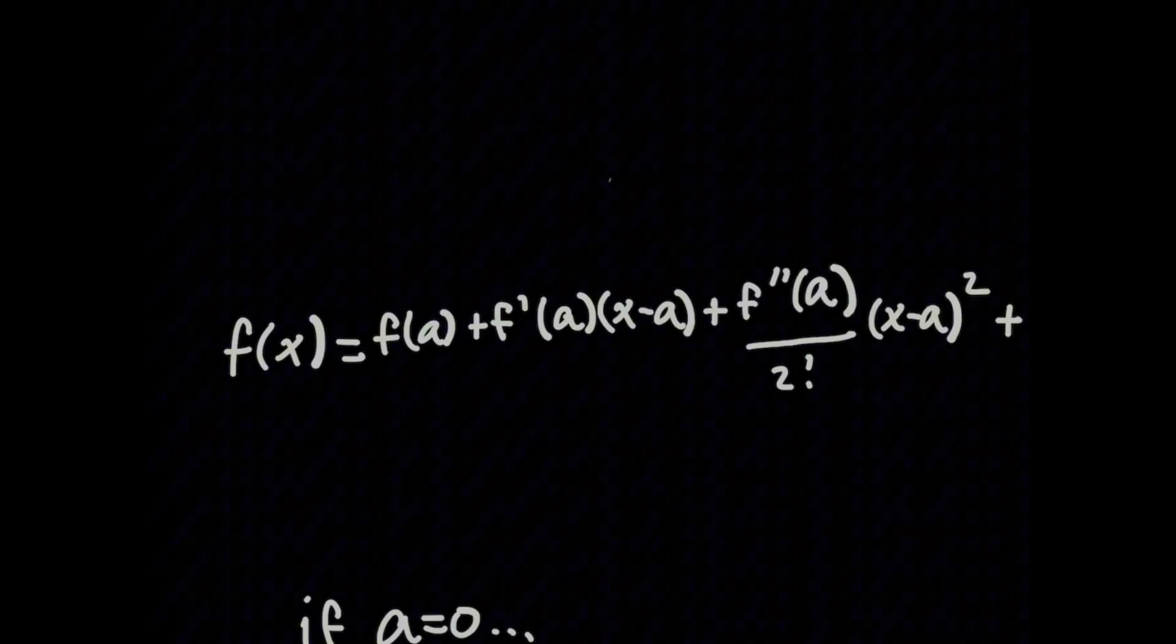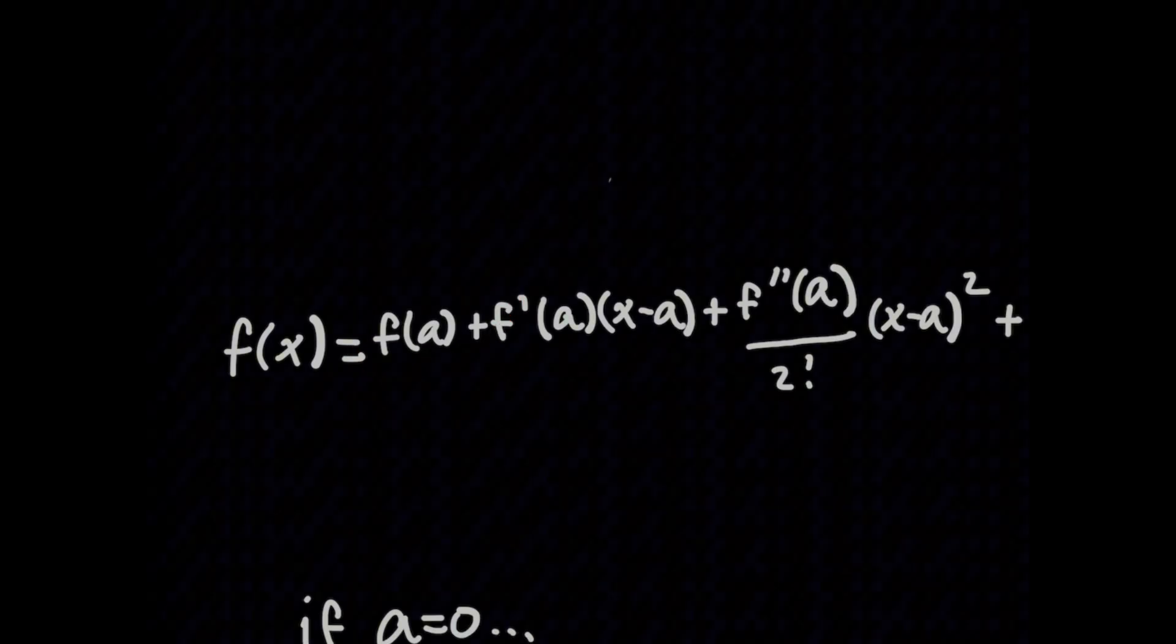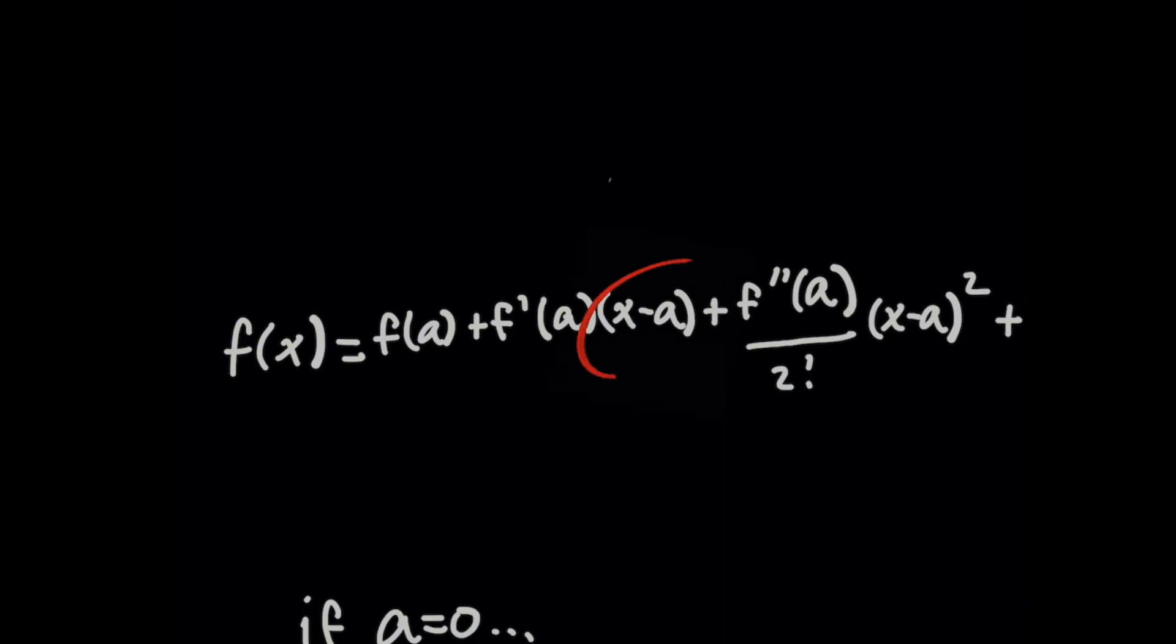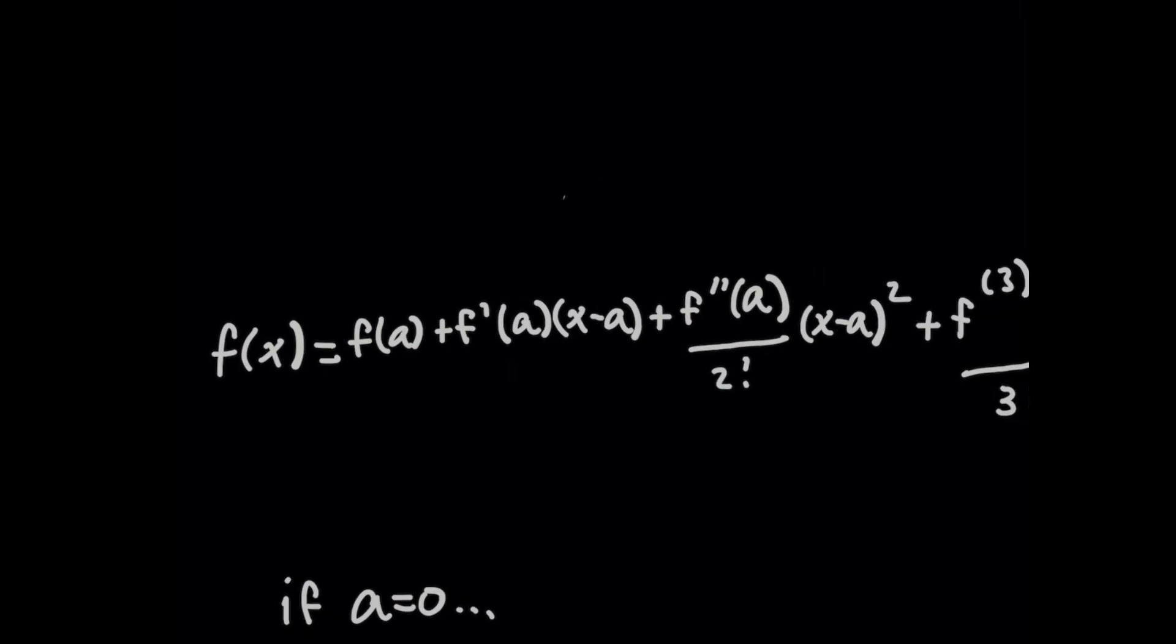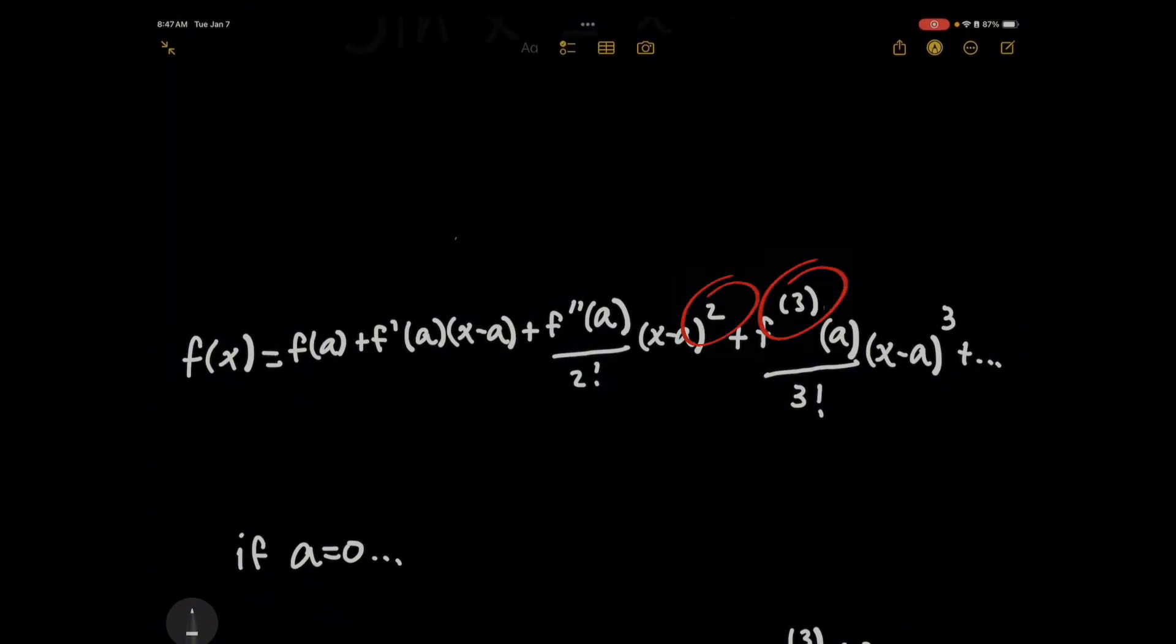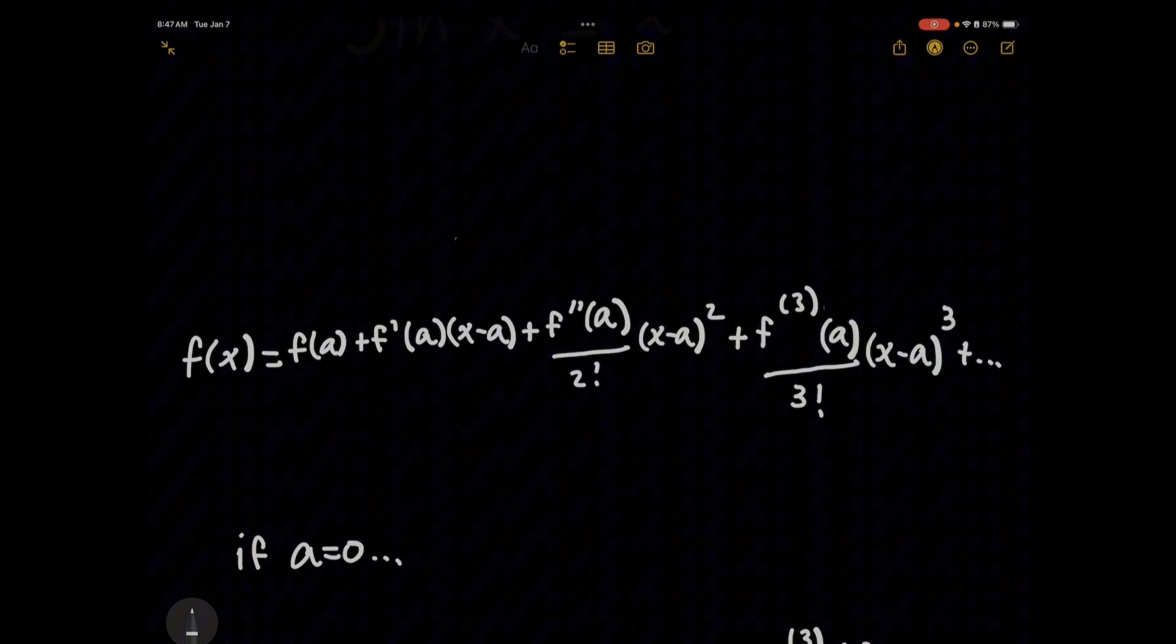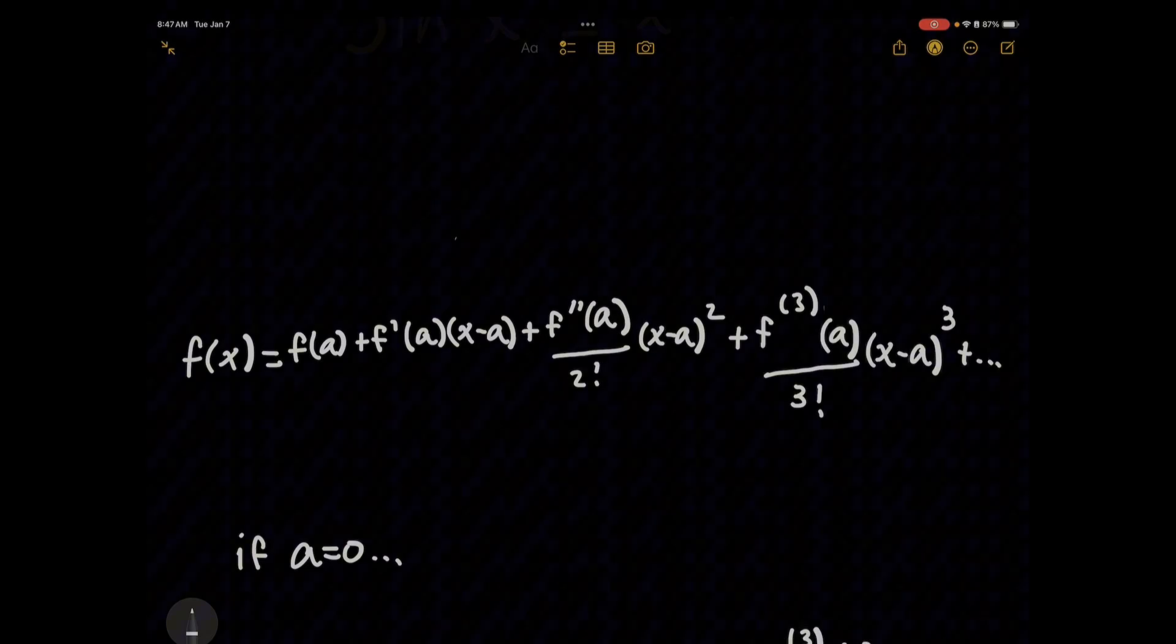The first term of the series is simply evaluating f at a. The next term is taking the derivative function for f, plugging in a for that, and multiplying the result by x minus a. And then for the following terms, notice that we start introducing x minus a to a higher power by one as you take each term out. And then for the denominator, the factorial keeps increasing, right? And so this is infinitely many terms, and you can rewrite this expression using a sum notation.